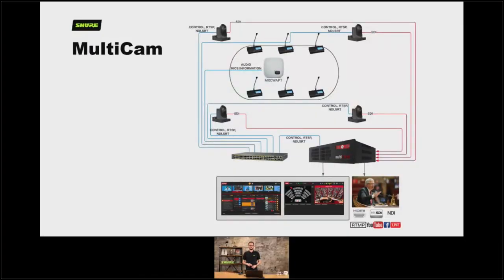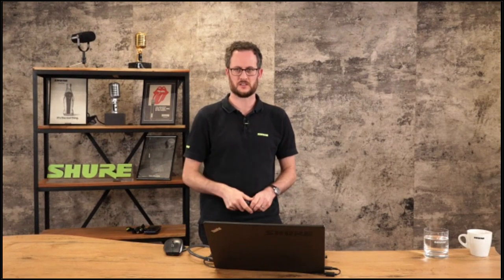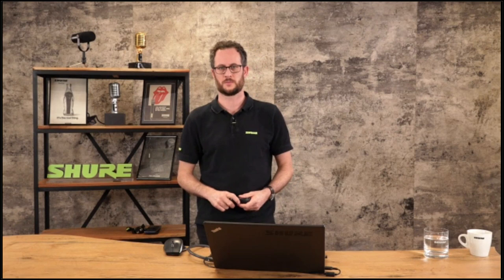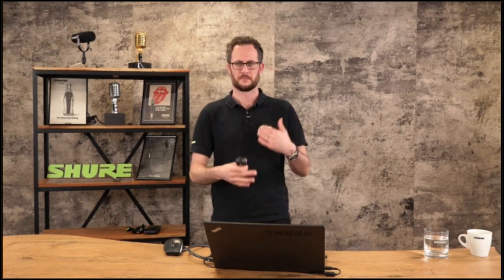That could also be done with the Microflex Complete wireless system. You can have the delegate microphones out on the desk, and you could have somebody monitoring from a remote location. If somebody happens to forget to press their button when they want to talk, you could use the mimic on that screen to do two jobs at once: press the button to activate the mic they've forgotten to turn on themselves, and also cut the camera to that preset. So it gives you a bit of extra technician-led safety over the system rather than it being a fully automated one.